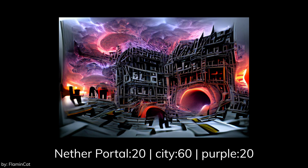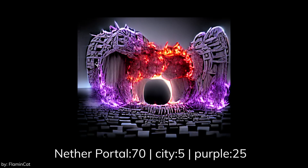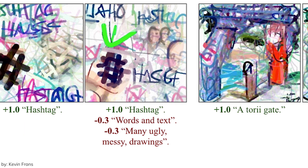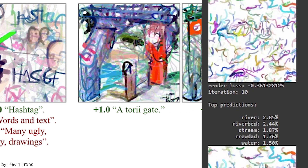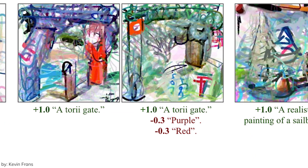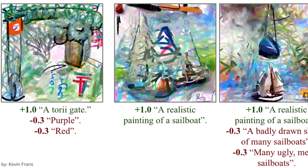CLIP Draw also has a function where it not only tries to fit the text descriptions but can also intentionally not fit some other text descriptions too. Negative prompts can be taken into consideration when generating the results besides the input prompt — like how you can specify the drawing not to be ugly or not have a specific trait. In VQGAN you can adjust the values of a specific keyword, but CLIP Draw lets you see the classification percentages and you can adjust your negative prompts based on that.